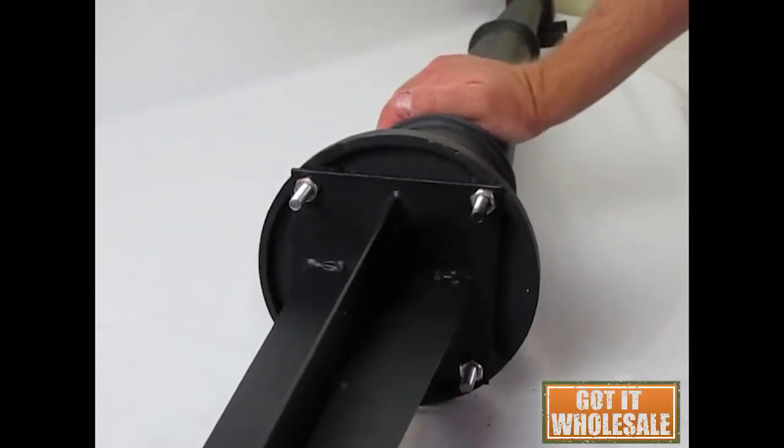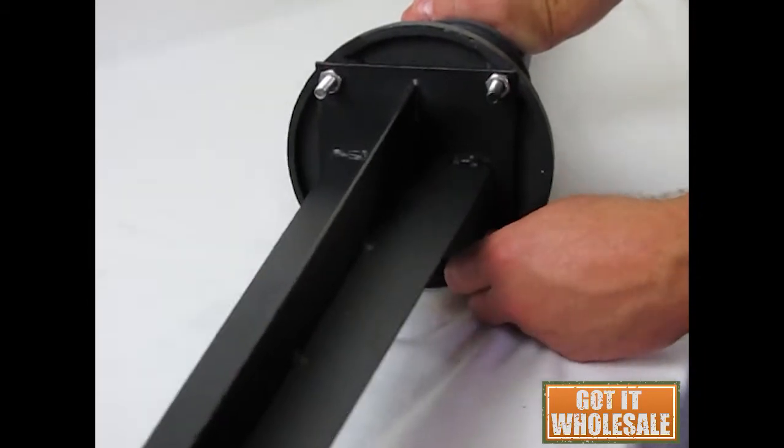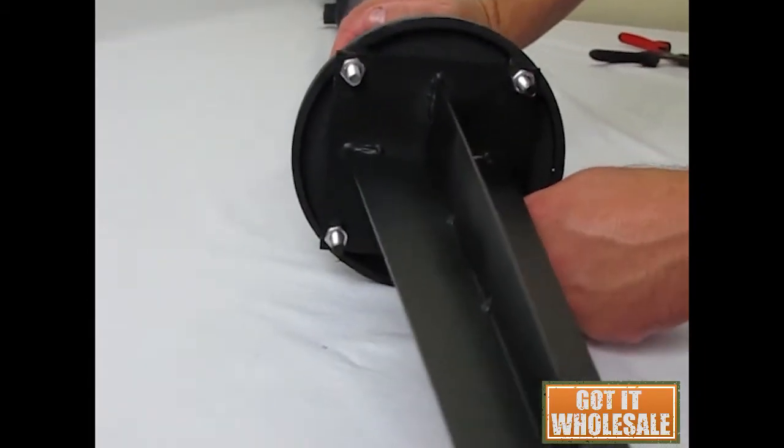So here we have the MB300 post along with the fork. This fork also fits on a couple of other of our mailbox posts, particularly the MB250.